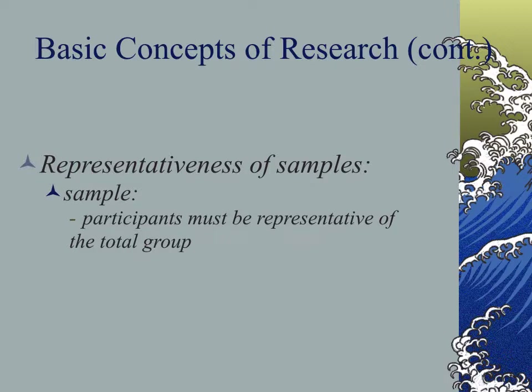The samples we use to test these hypotheses need to be representative of the total group we hope to make assumptions about; otherwise it's not great research. We want a diversity of participants if diversity is who we're looking to generalize to. Otherwise, we may want a very homogenous group if it's something within a cultural group or gender group — for example, deciphering how different types of men or women deal with stress or anxiety.